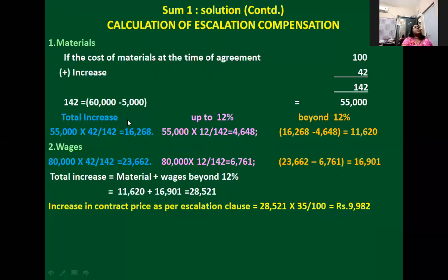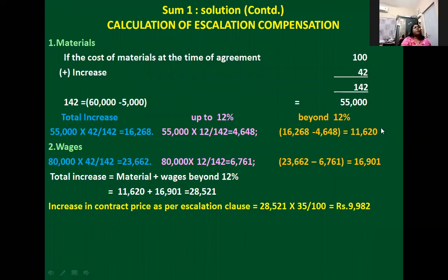The total increase for materials is 16,268. Out of this amount, I am not eligible to get compensation to the extent of 4,648, because up to 12% increase in price of materials and wages is acceptable. Beyond 12% only, as a contractor, am I eligible to get compensation. So out of the total increase of 16,268, what is the amount up to 12%? That is 4,648. Beyond 12%, the extra material cost is 11,620. For this extent only, I am eligible to get escalation compensation.